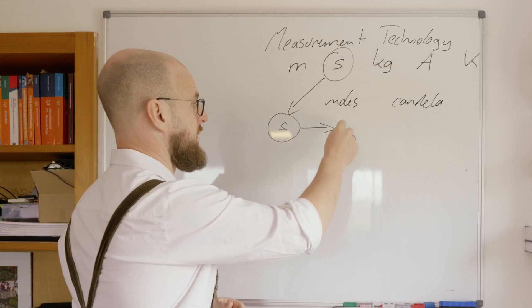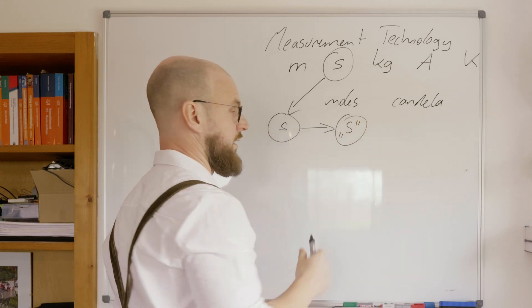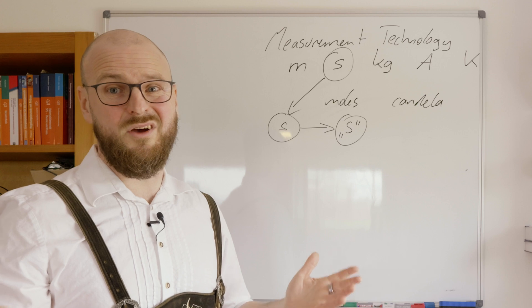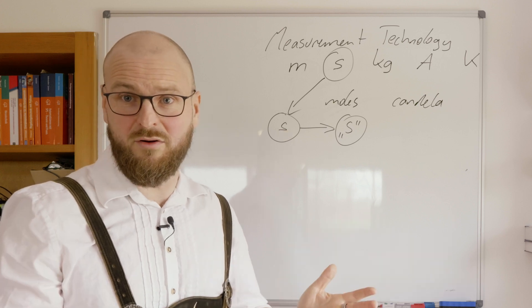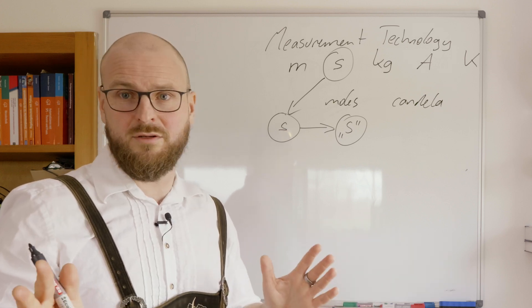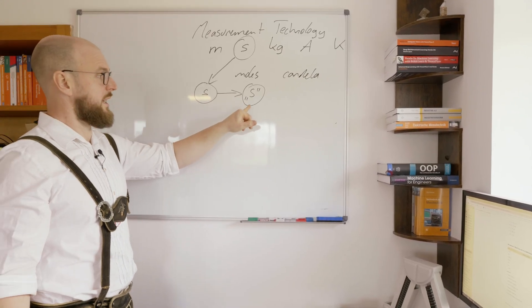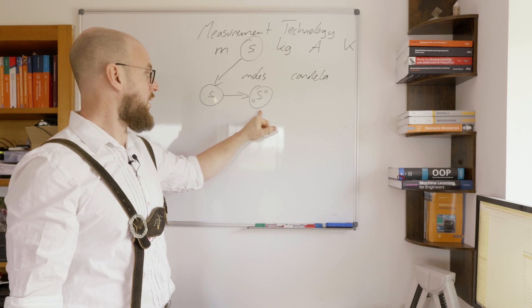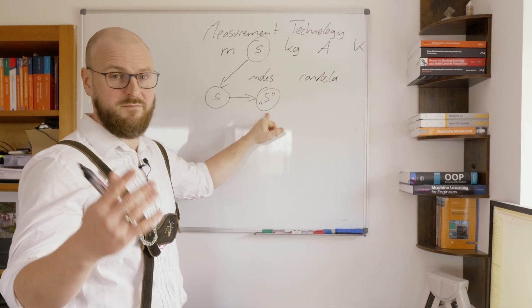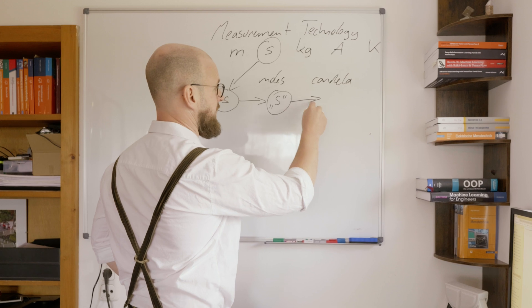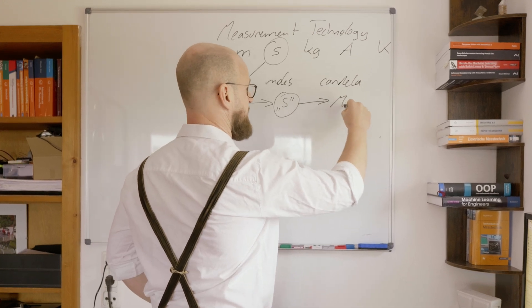That value of a second is normally transferred to some other measurement device which can represent a second very well - for example, a quartz clock, your handy clock, your cell phone clock, or anything you want to have that second as a unit more usable within your pocket.